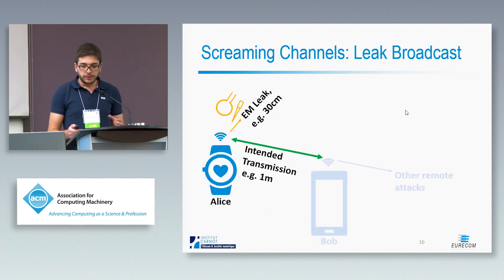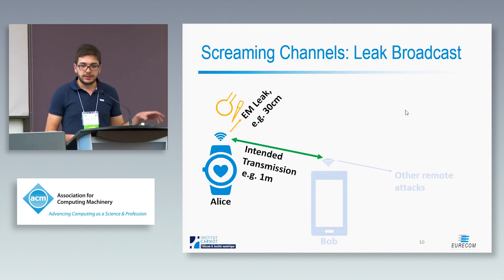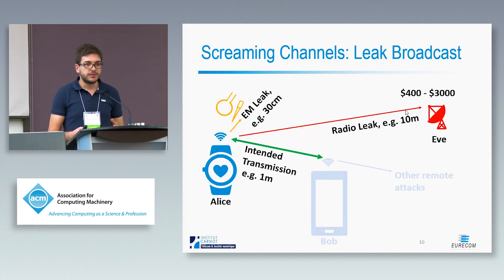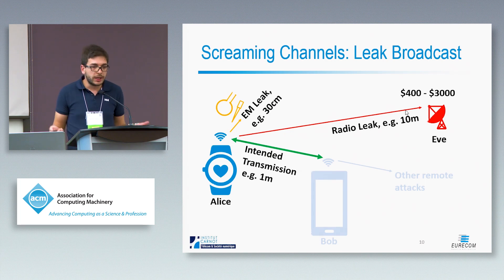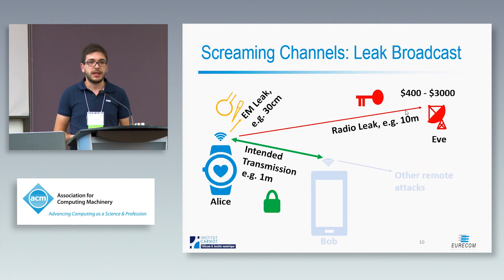So we have our connected device which is sending some intended transmission, for example at one meter to a smartphone. We could do some classic electromagnetic side channels in close proximity, but we now also have leaks that are transmitted over a potentially very large distance, for example 10 meters, and that could be retrieved with very cheap off-the-shelf equipment. An example application would be that the communication is encrypted, but we listen with this new kind of leak, retrieve the key with a side channel attack, break the encryption, and use it to retrieve the plaintext data.